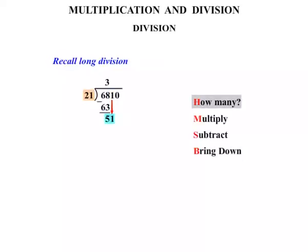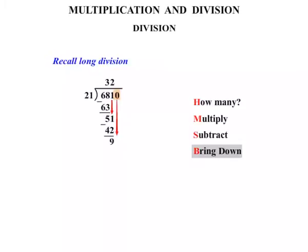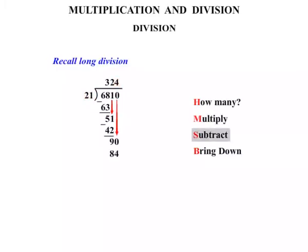Then we start all over again. How many times does 21 go into 51? This time it goes twice. Multiply 2 by 21 to get 42. Subtraction: 51 minus 42 equals 9. Bring down the 0, making that number 90. Again: how many times does 21 go into 90? It goes 4 times. Multiply 4 by 21 to get 84. Subtract: 90 minus 84 leaves 6. Nothing to bring down, so that 6 is the remainder.